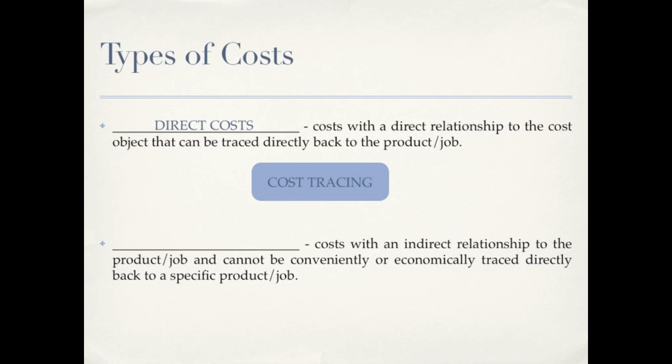The second type of cost is an indirect cost. Now unlike direct costs, these costs cannot be traced directly back to a product. So we call this cost allocation. Indirect costs have to be allocated to a product because they can't be traced directly back to a product.